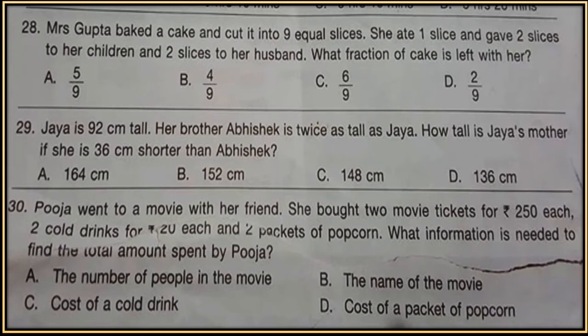Question 30. Pooja went to a movie with her friend. She bought 2 movie tickets for Rs. 250 each, 2 cold drinks for Rs. 20 each, and 2 packets of popcorn. What information is needed to find the total amount spent by Pooja?